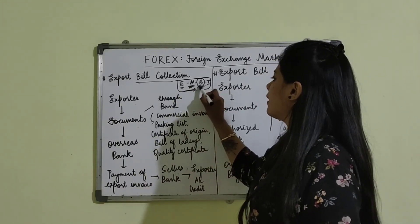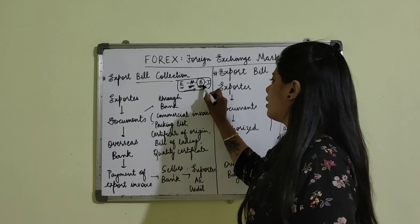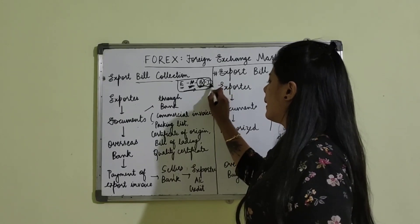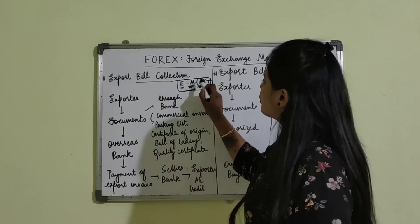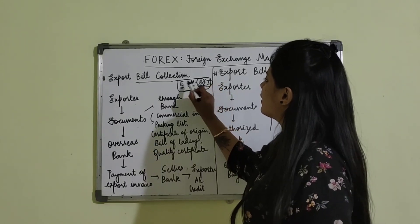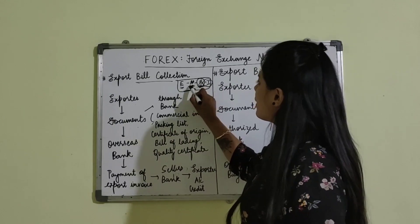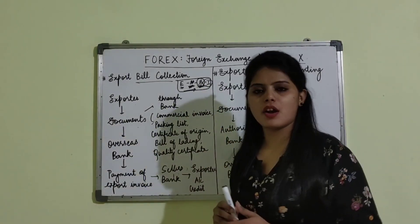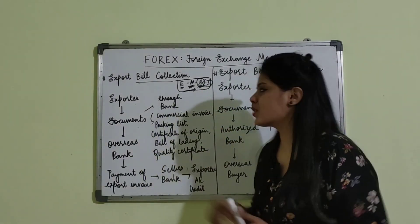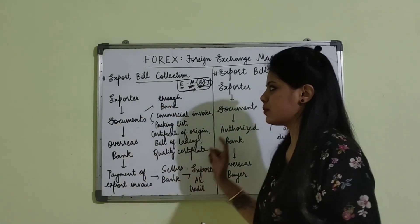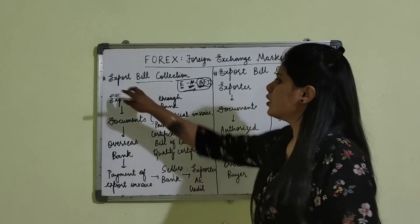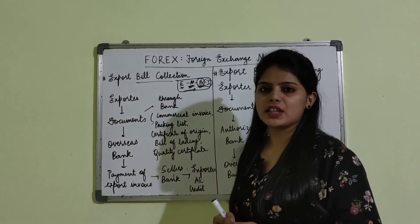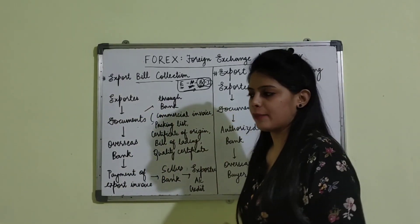The buyer's bank receives the amount from the importer. The importer pays its bank, that bank pays the exporter's bank, and then it gets credited to the exporter's account. For this, the exporter first has to send the documents. This is how export bill collection works.